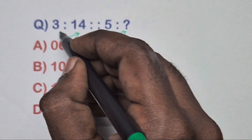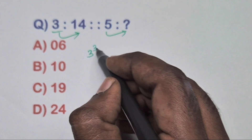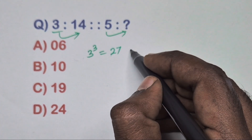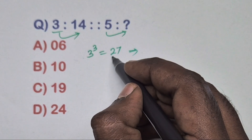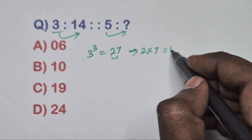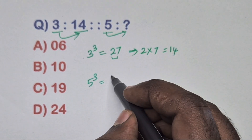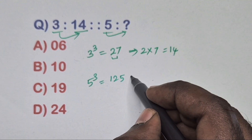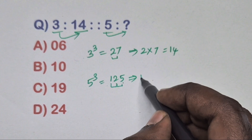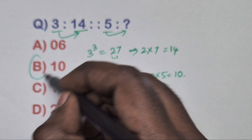Find the relation between this question. Take 3: 3 cubed is 27, and multiplying the digits of 27 gives 14. Same way, take 5: 5 cubed is 125. Multiply the digits: 1 × 2 × 5 = 10. So option B is the correct answer.